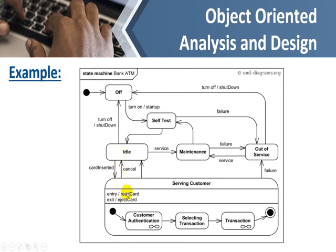If we inserted the right card, it proceeds to customer authentication. Once authenticated, we select the transaction — withdraw money, transfer money, or pay a bill. After the transaction is done, that is the final state for that transaction, and the machine goes back to idle state, waiting for another customer to start a new transaction.